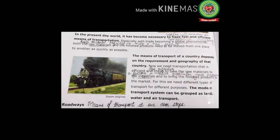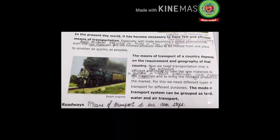The means of transport of a country depends upon the requirement and geography of that country. Mark the meanings: requirement means need; geography means the study of the earth's surface. The means of transport also depends upon the need and type of landform in that area. If you want to cross a water body, you can use water transport or air transport. If you want to go through a desert, you need land transport to cross it easily.